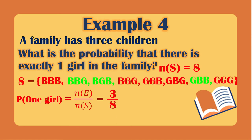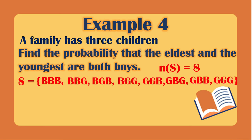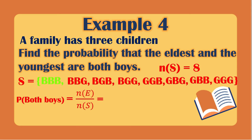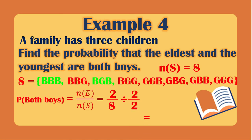What is the probability that the eldest and youngest are both boys? The favorable outcomes are BBB and BGB, giving 2 favorable outcomes over the total of 8. The GCF of 2 and 8 is 2, so 2/8 simplifies to 1/4. There is a 1/4 chance that the eldest and youngest are both boys.